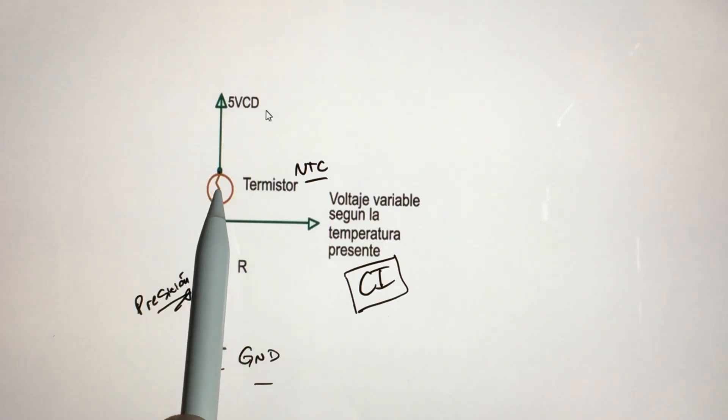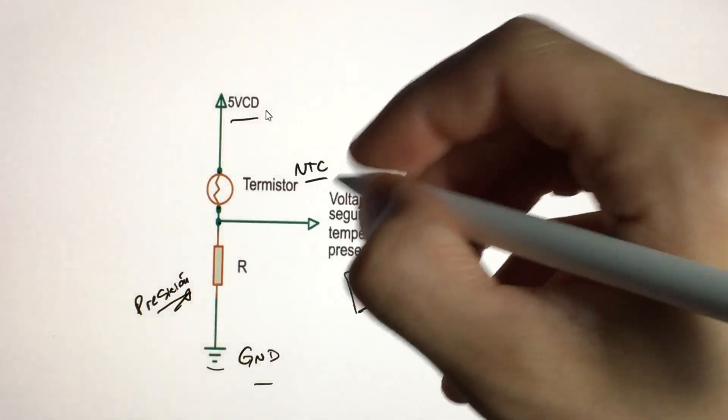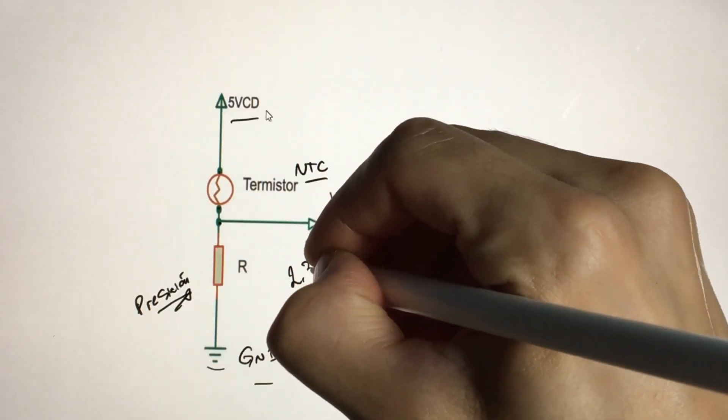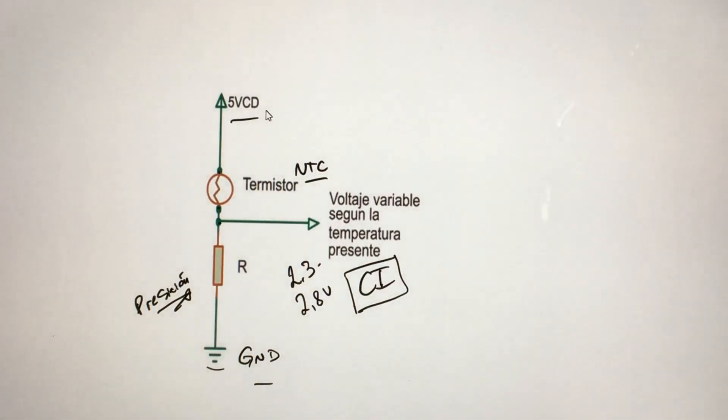As a result, as this resistance varies, the voltage that enters the microprocessor also varies. If we inject 5V into the sensor, approximately 2.3 to 2.8V will be injected into that integrated circuit. And through this variation, it understands what temperature it is.